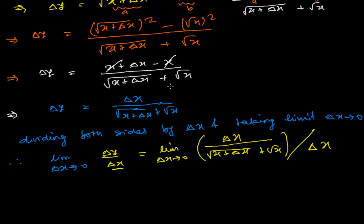My delta x and delta x will cancel out, and I'm left with limit delta x tends to 0 of delta y over delta x equals 1 over [root of x plus delta x plus root x].